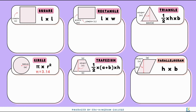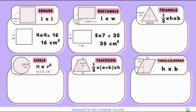Now let's have a look at some examples. We have a square here of 4 centimeters length. 4 times 4 gives us 16, so the area of the square is going to be 16 centimeters squared. Moving on to this rectangle, it has a length of 7 centimeters and a width of 5 centimeters. 5 times 7 gives us 35, so this rectangle has an area of 35 centimeters squared.